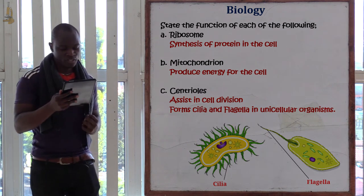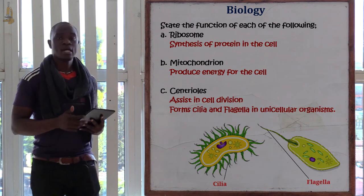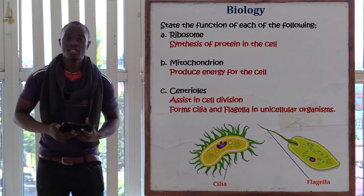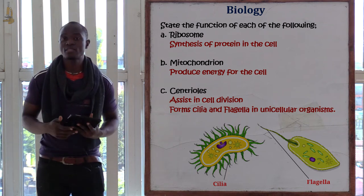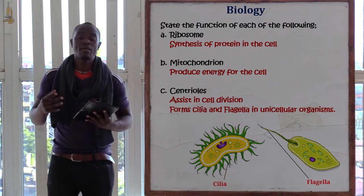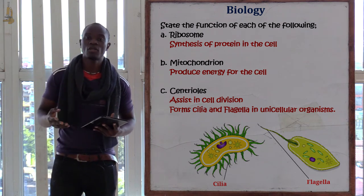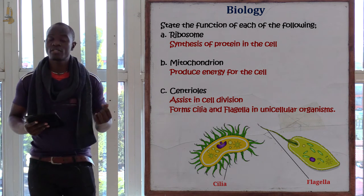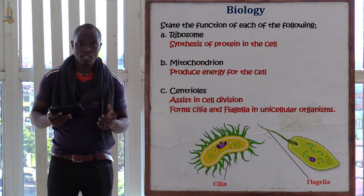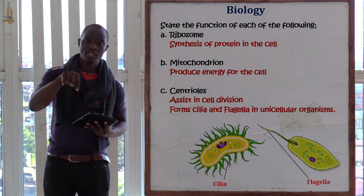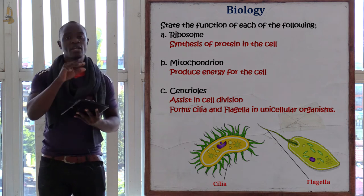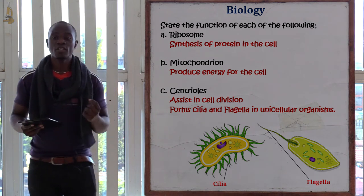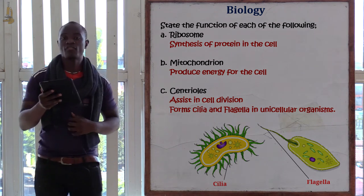The function of the ribosome is protein synthesis — it assists in making protein. Ribosomes are found on the rough endoplasmic reticulum. After ribosomes make the protein, it enters the rough endoplasmic reticulum, whose function is to transport the protein.